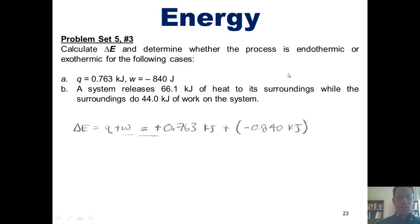The value of heat is 0.763 kilojoules, and the value of work is negative 0.840 kilojoules. Note that I've converted the original value for work we were given, negative 840 joules, into kilojoules, so that my units match for both heat and work as I add them together. I throw this into my calculator and discover that the overall delta E for this process is negative 0.077 kilojoules.